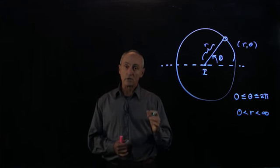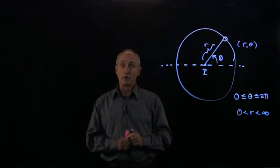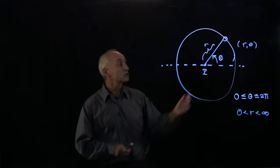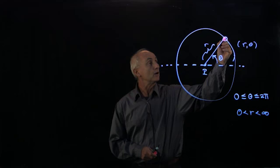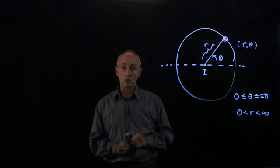When you have a coordinate system, remember, at every point in space there have to be unit vectors. So at this point right here, how do we choose unit vectors for polar coordinates?